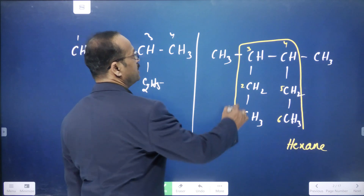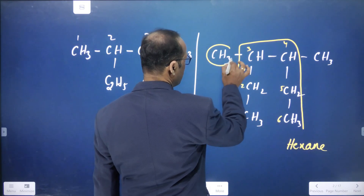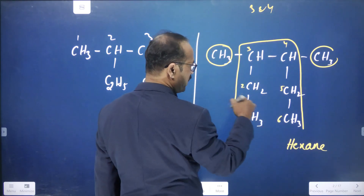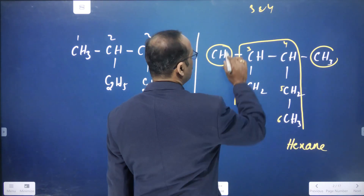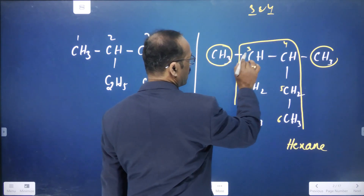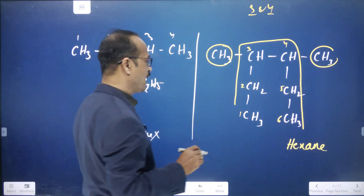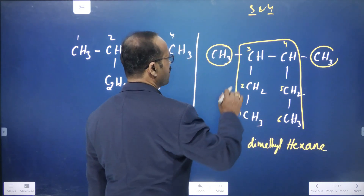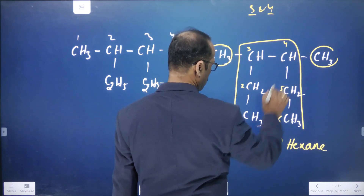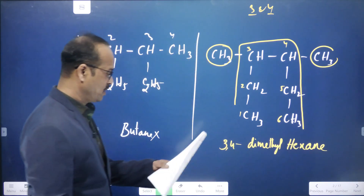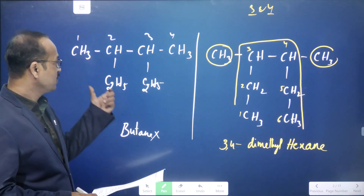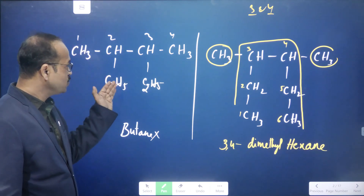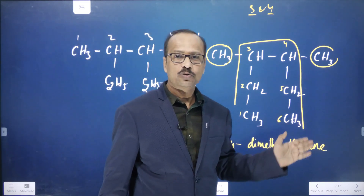For the third carbon there is one methyl group, and for the fourth carbon there is another methyl group — so two methyls at carbons 3 and 4. Two methyls is called dimethyl. Counting from either end gives 3 and 4 the same. So we write 3,4-dimethylhexane. That is the answer.